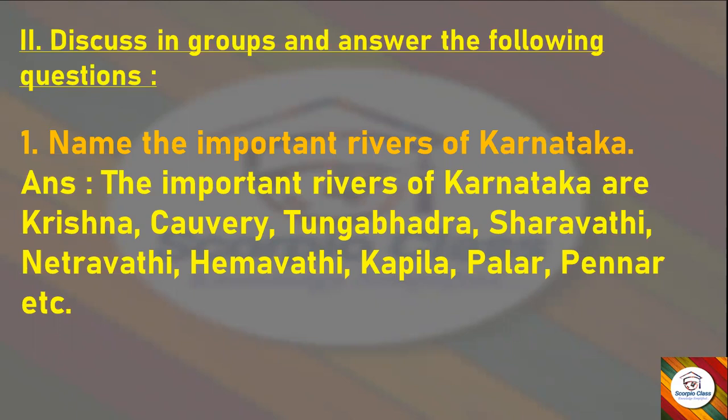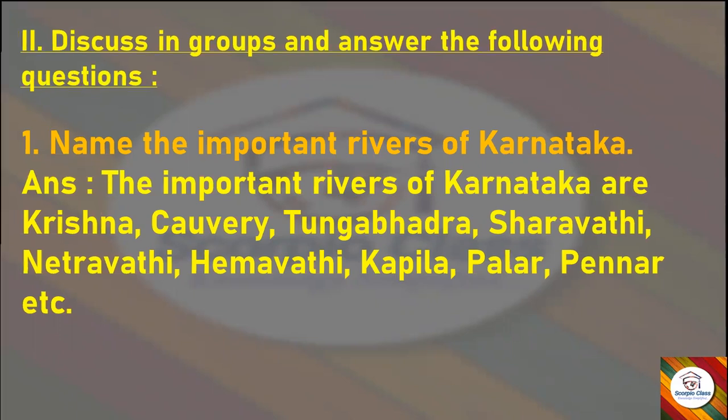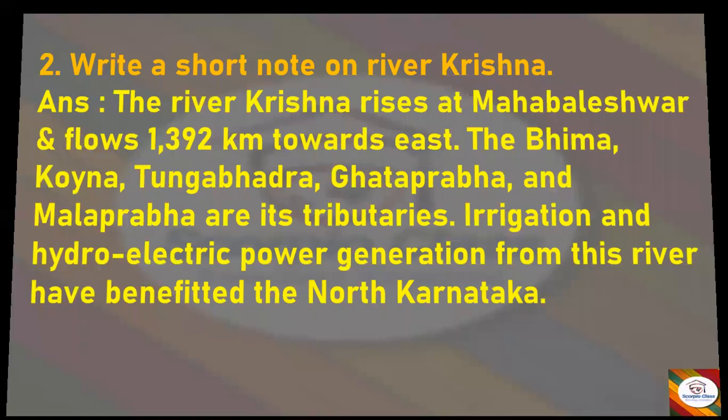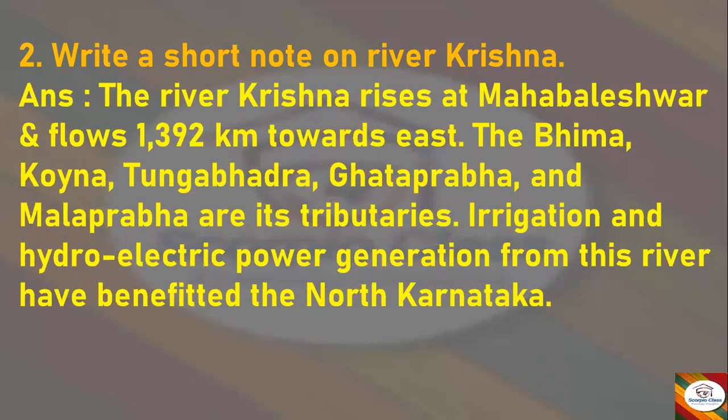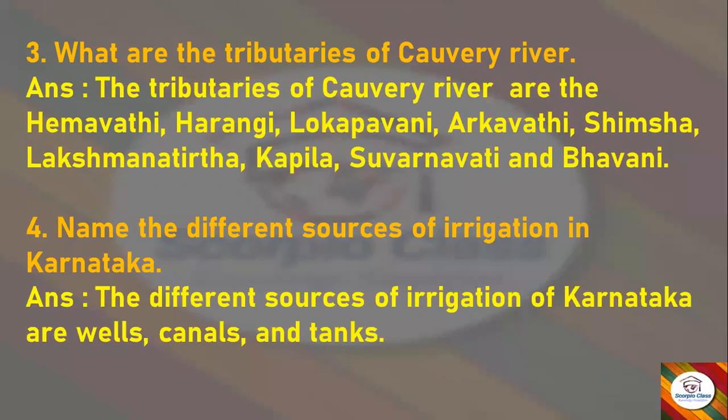Next: Write a short note on River Krishna. Answer: The River Krishna rises at Mahabaleshwar and flows 1,392 km towards the east. The Bhima, Koyna, Tungabhadra, Ghataprabha, and Malaprabha are its tributaries. Irrigation and hydroelectric power generation from this river have greatly benefited North Karnataka.